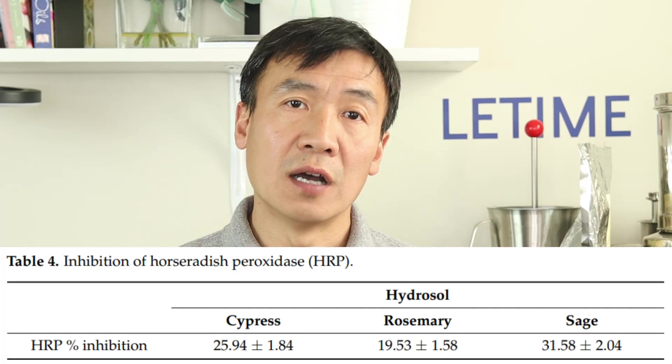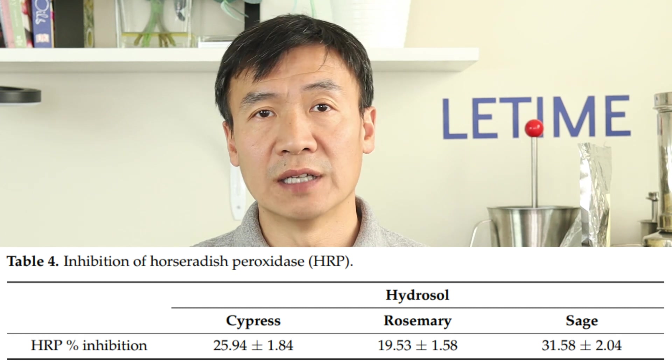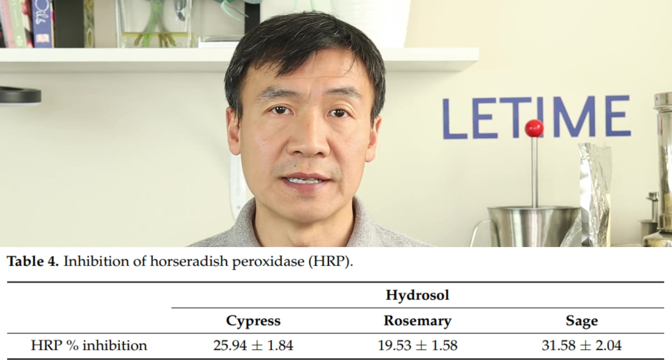The third experiment measured the antioxidant property of rosemary hydrosol. It was found to control 20% of the horseradish peroxidase enzyme, which is a symbolic oxidant used to quantify the power of antioxidants. The rosemary hydrosol shows pretty good antioxidant behavior.